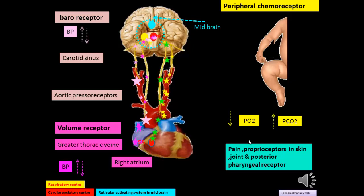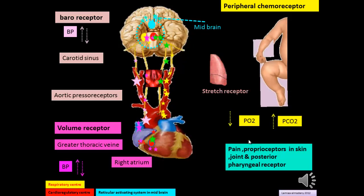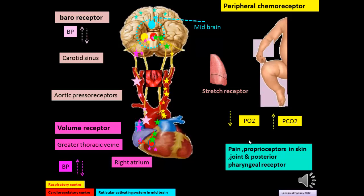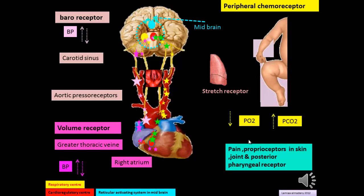The stretch receptor in the lung sends impulses during fetal breathing directly to the reticular activating system, which affects the cardioregulatory center. Pain receptors, proprioceptors in the skin, joints, and posterior synaptic receptors — whenever there is fetal movement — send impulses to the brain cortex, which affects the reticular activating system in the midbrain, and this is presented as fluctuation in the long-term variability.